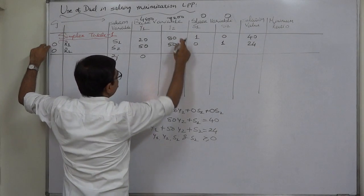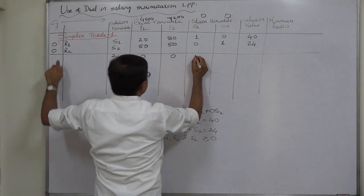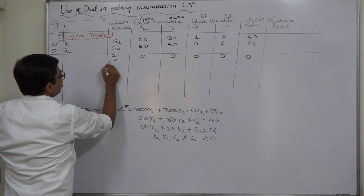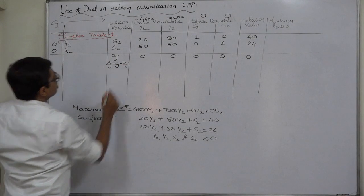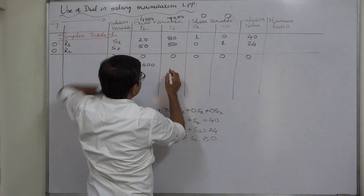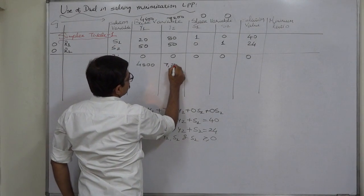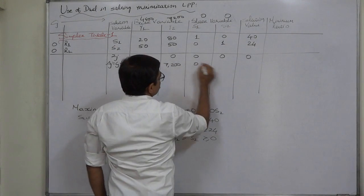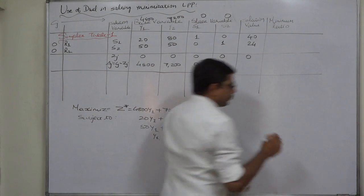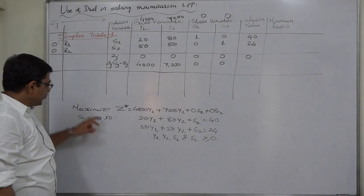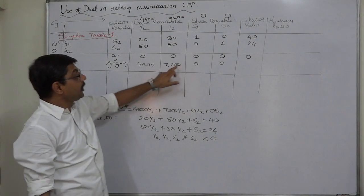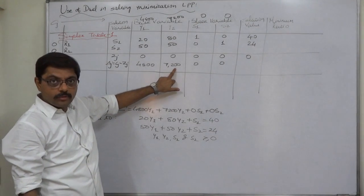Now we calculate the delta values, which are Cj minus Zj. For y1: 4800 minus 0 = 4800. For y2: 7200 minus 0 = 7200. For s1 and s2: 0 minus 0 = 0. Now let us check if this is the optimal solution. Our objective is maximization, so all delta j values should be 0 or negative for an optimal solution.